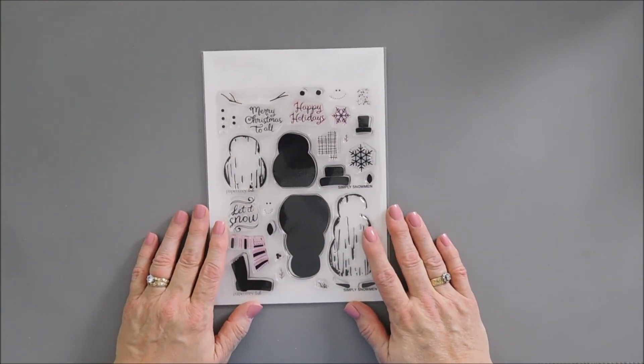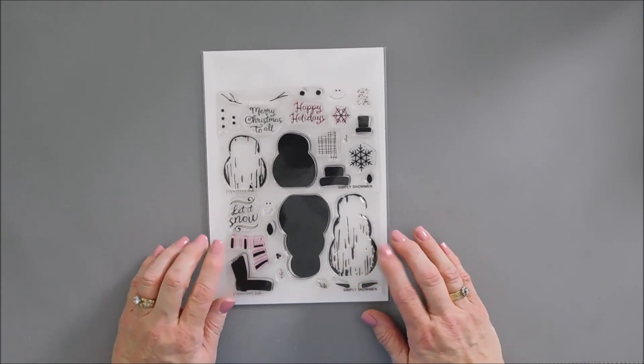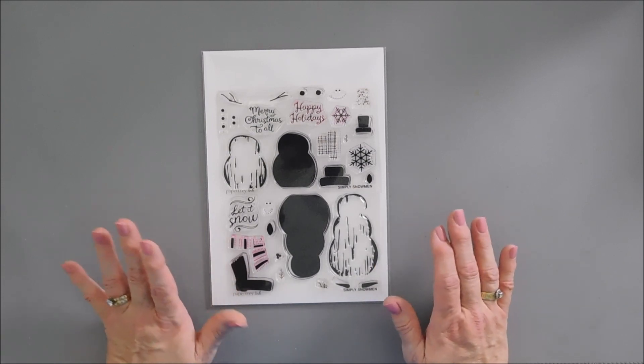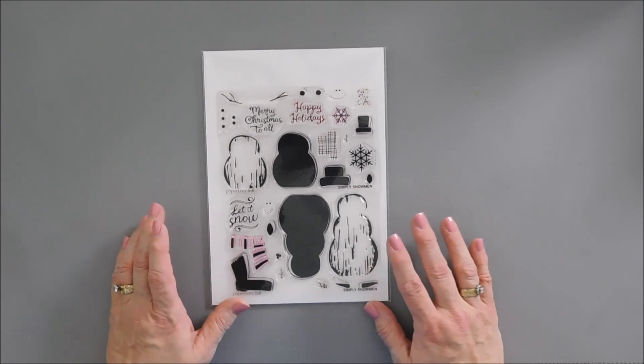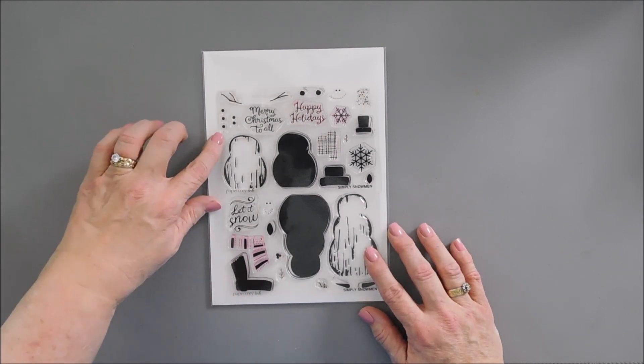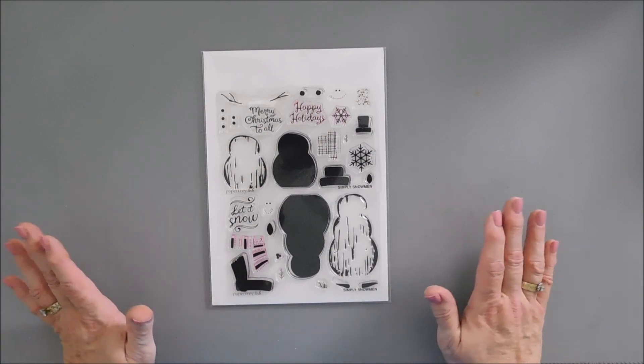Today we're going to create a card with a brand new stamp set that just arrived over at Paper Tray Inc. We're going to be using the Simply Snowman stamp set. Such a cute thing. This creates two snowmen, they're just adorable. And then there's some accent elements like berries, leaves, and snowflakes. So perfect for a wintry scene.